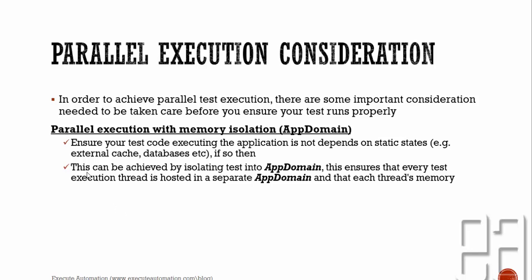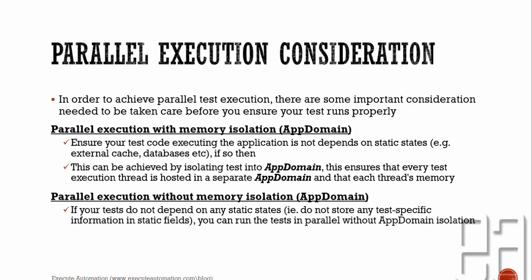Isolating tests into app domains ensures that every test execution thread is hosted in a separate app domain with its own memory. This is how you can do parallel execution with memory isolation. There is another option: parallel execution without memory isolation. If your tests do not depend on any static states — that is, they do not store test-specific information in static fields — you can run the tests in parallel without app domain isolation.